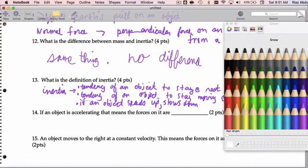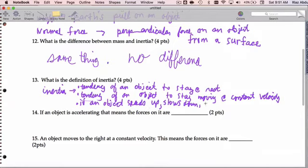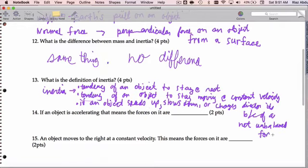and the last part of inertia is, if an object speeds up, slows down, or changes direction, it's because of a net unbalanced force. All of that is inertia, and I want all of that on your test.